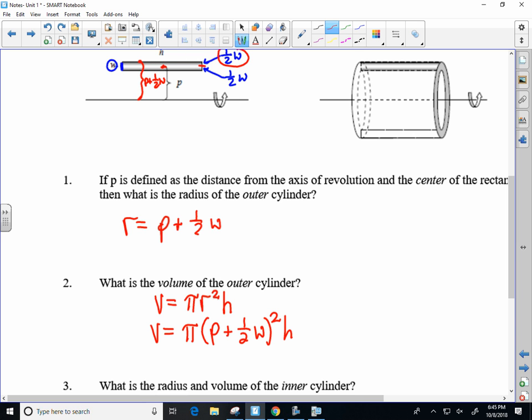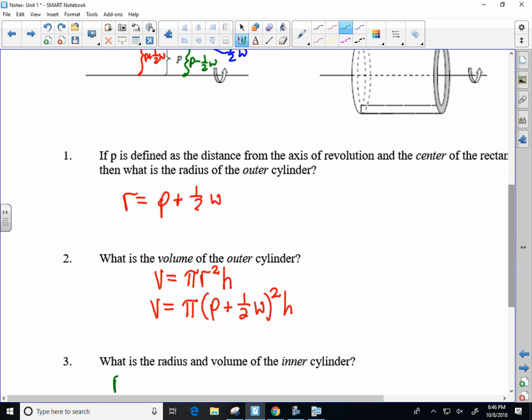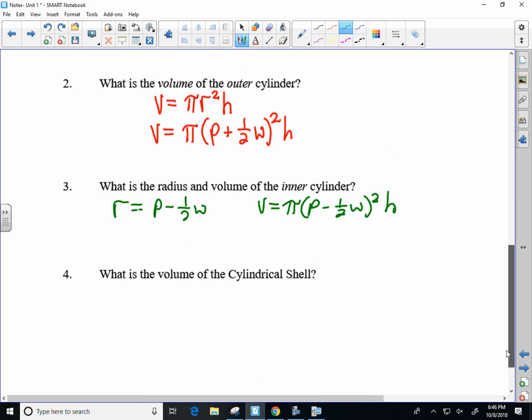Times H. H we haven't defined in any meaningful way other than to say it's some height to be determined. The next question asks us what is the radius and volume of the inner cylinder. That's here, in which case I have to go to the halfway point P and come backwards half one width. So I'm taking my answers to one and two and putting it down all in one shot. R equals P minus a half W, and the volume would be equal to π R² H, with the R being P minus a half W.